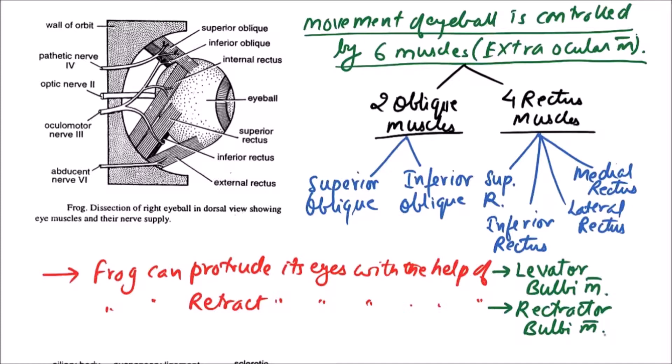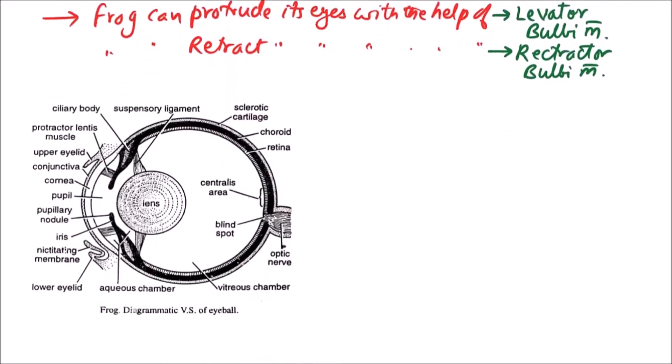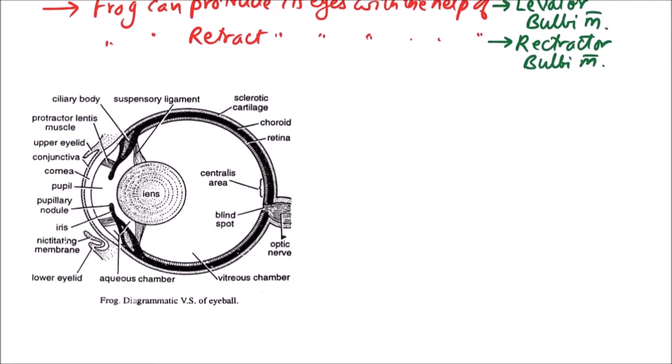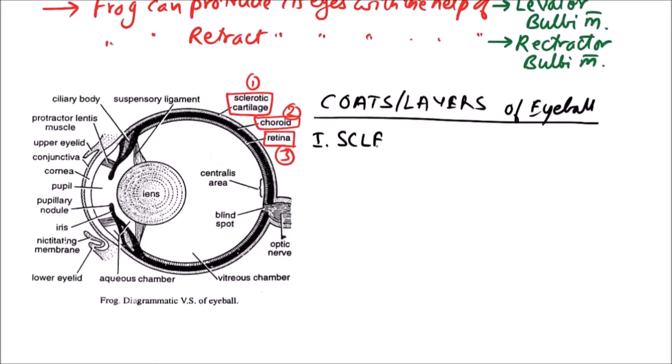One third of the eyeball, that is the exposed part, is transparent, while the two-thirds of the eyeball which is concealed part is opaque. Now the coats or layers of eyeball are three: the first one is sclerotic or cartilage, the middle one is choroid, and the innermost is retina.